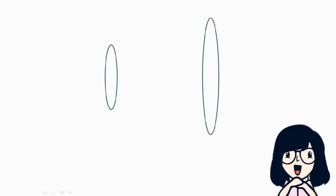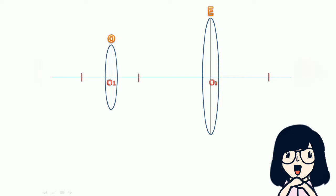The ray diagram shows two convex lenses: the objective lens and the eyepiece. The optical center of the objective lens is represented as O1 and that of the eyepiece as O2. The focus of the objective lens is represented as F0 and the focus of the eyepiece as FE. Object AB is placed outside the focus F0 of the objective lens. Its real, inverted, and magnified image A'B' forms on the other side beyond 2F0.